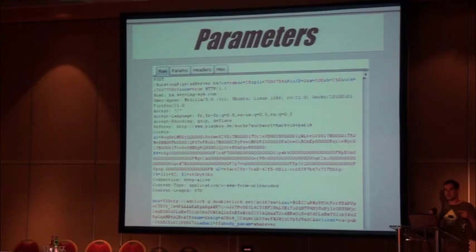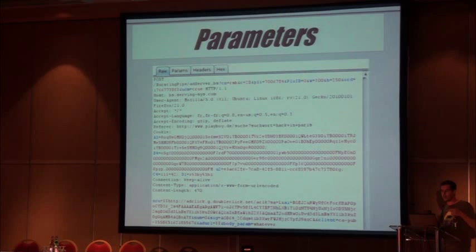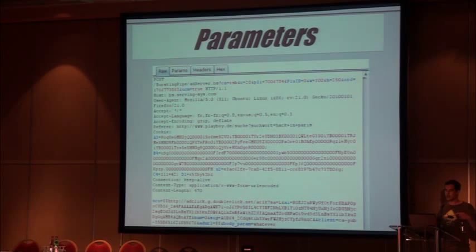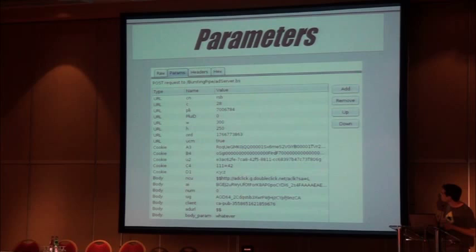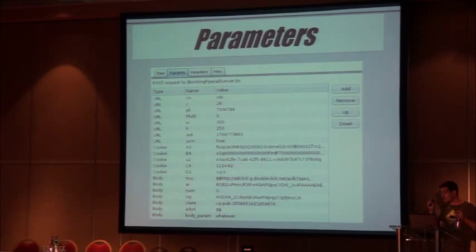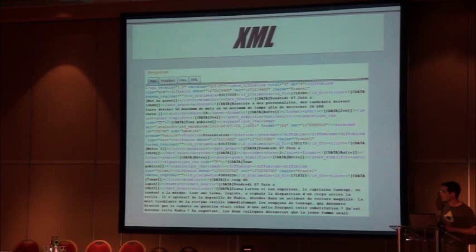We will encounter a lot of different formats during engagements depending on the underlying technologies. You have a lot of formats supported by default and some others via extensions. This is the classic request — you have GET parameters, POST parameters, and cookies. It's not very readable. If you want to switch something from POST to cookie, you need to take care of encoding. Just switch to the params tab and everything is much more readable. It's very easy to remove several parameters without looking for the semicolon you might miss.